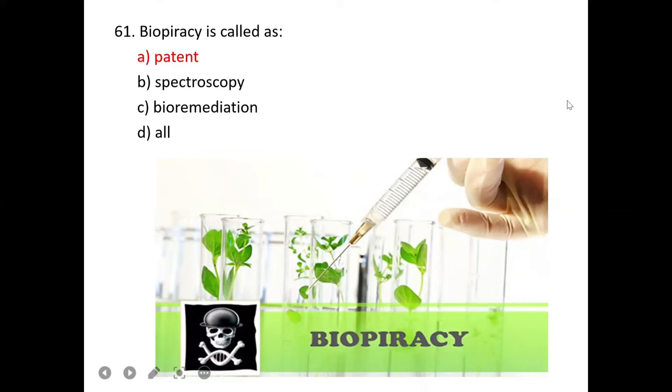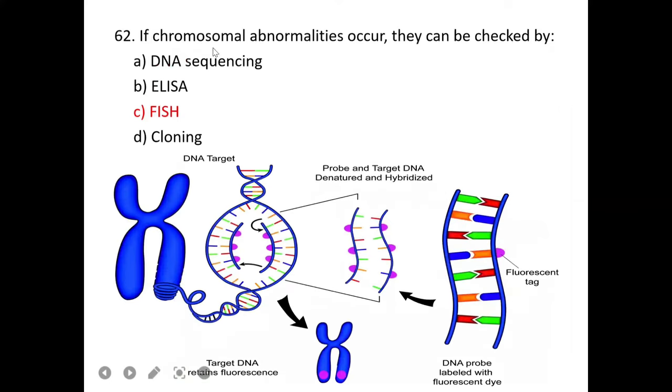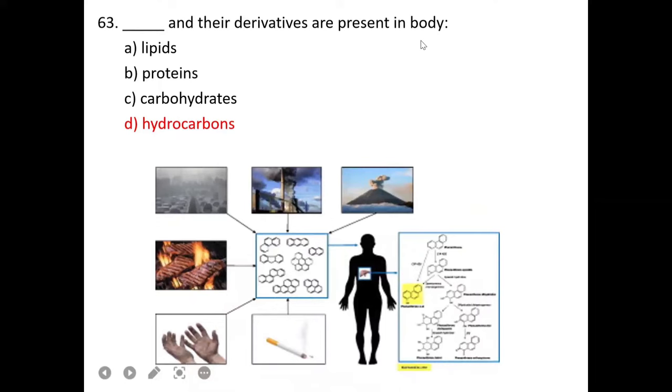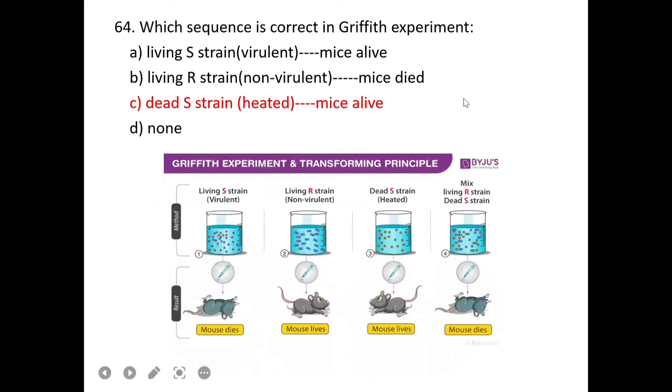Biopiracy is the illegal use of biological resources. Multinational companies illegally use resources without permission. Patent means granting an inventor rights to their new invention. So biopiracy is related to patent violation. A is correct. If chromosomal abnormalities occur, they can be checked by FISH, fluorescence in situ hybridization.